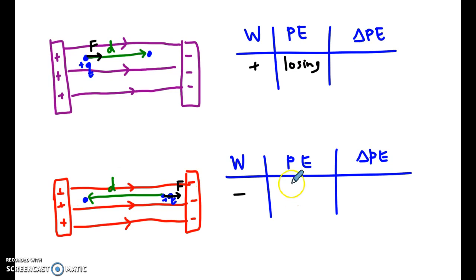Okay, so then the potential energy here is increasing. Let's write gaining. If you lose potential energy, your delta is negative. And if you gain potential energy, the delta PE is positive. The final is bigger than the initial. But there's another way to see this relationship.